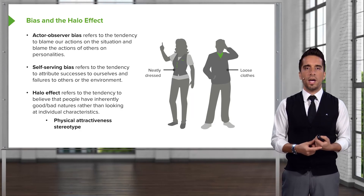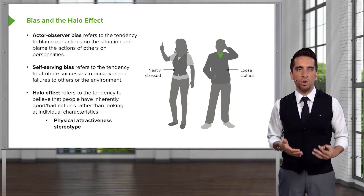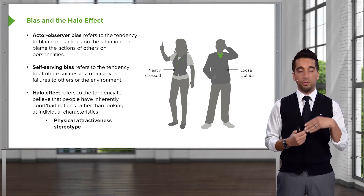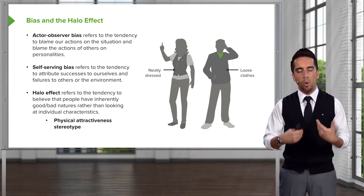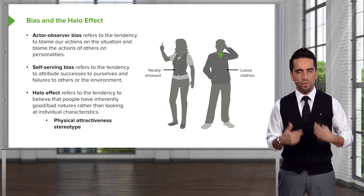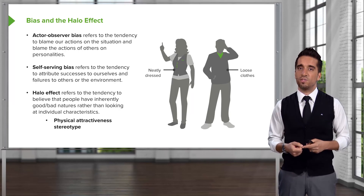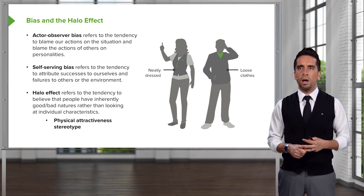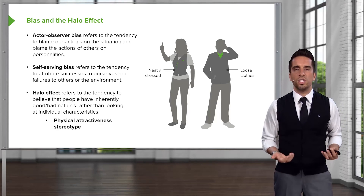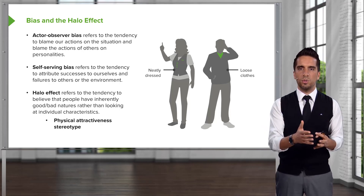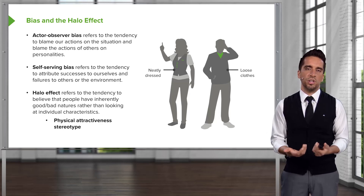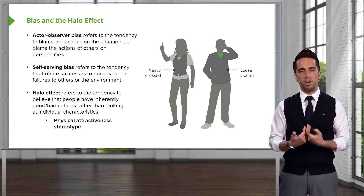Those who are physically attractive or dressed well tend to have a different personality attributed to them versus somebody who's not as well put together. When you're going for your first interview or meeting somebody for the first time, you always try to look your best. If you're wearing a suit and tie, people say, 'He must be successful, he's very smart, he's probably a nice guy.' Versus if you show up in ripped jeans and a Rolling Stones T-shirt, people react differently. Physical appearance has a huge impact on how you end up presenting yourself and how others perceive you.